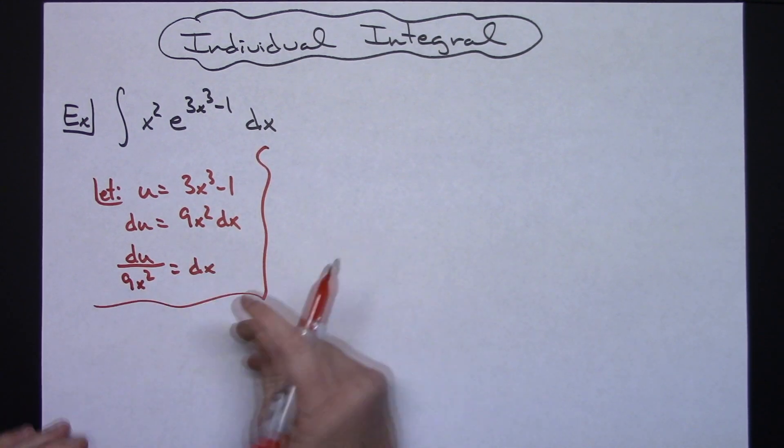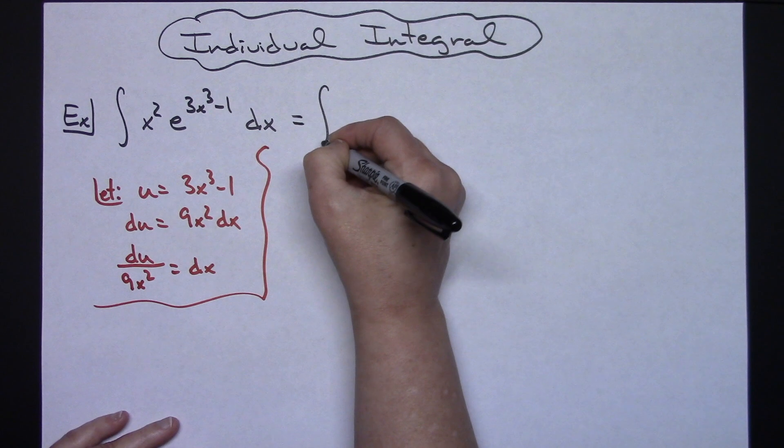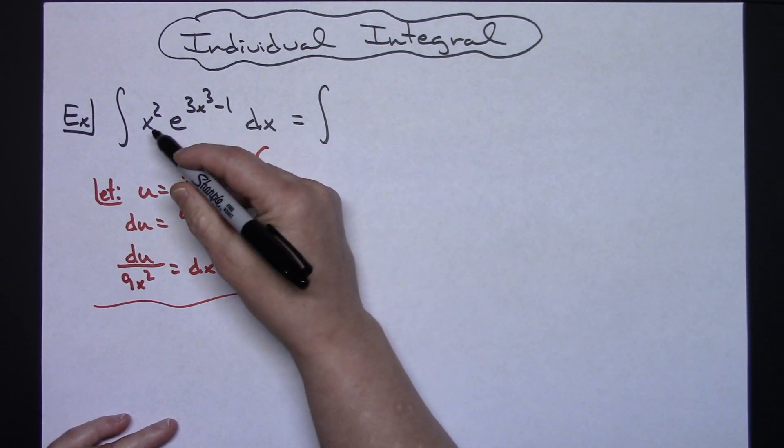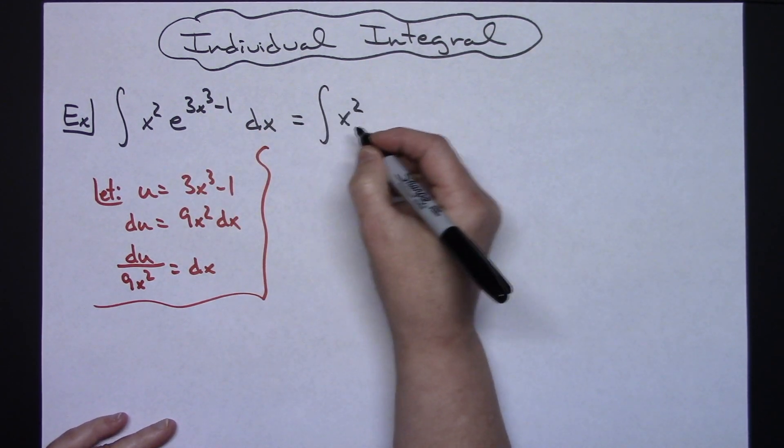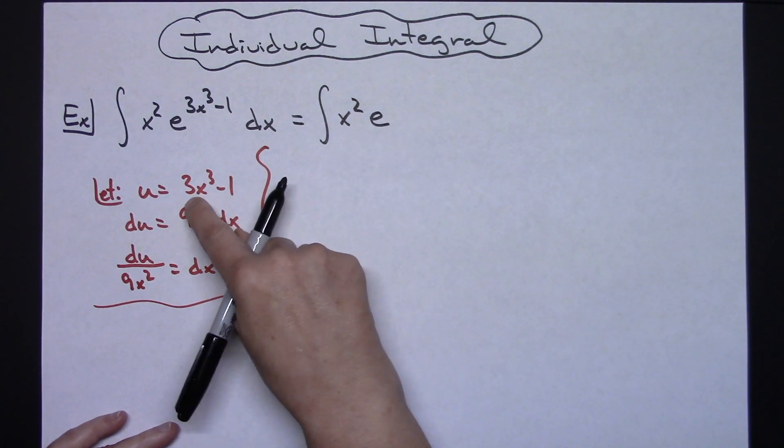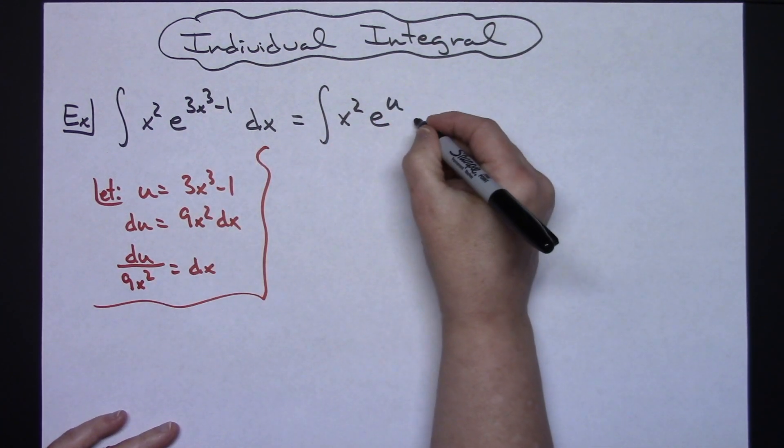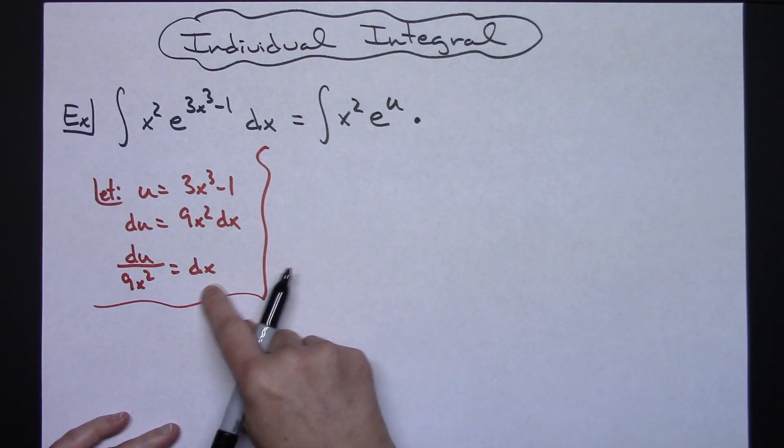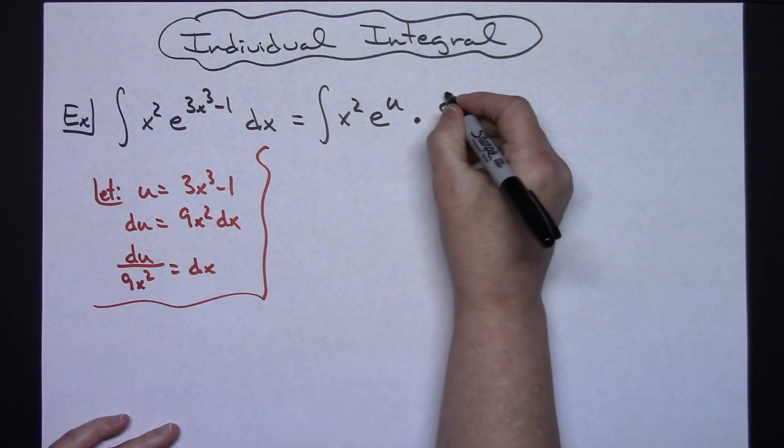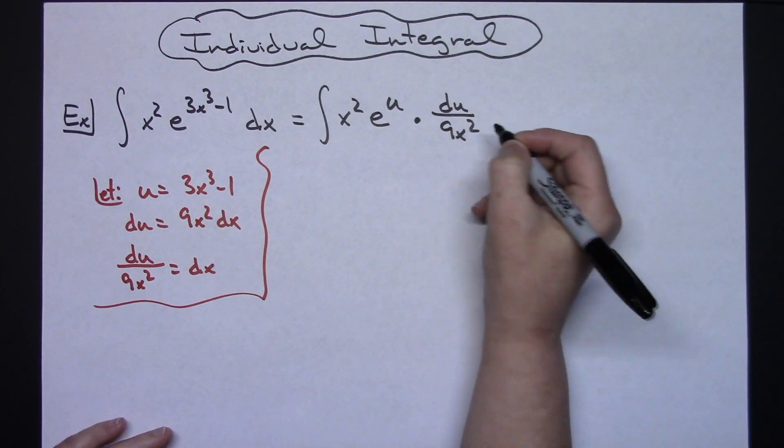After you do that first part, then we come back up here to the original integral and we start making some substitutions. We'll still have our x squared and then we'll have e, and then replacing that with our u we'll have a u right there, and then replacing dx with what that equals we'll have du over 9x squared.